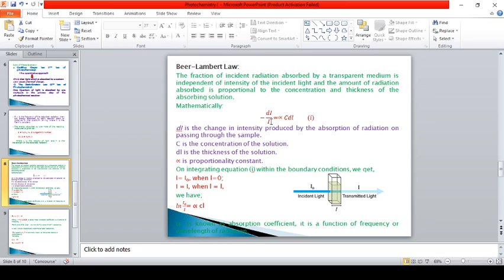Mathematically, it is expressed as minus dI by I equals alpha times C dL. dI is the change in intensity produced by the absorption of radiation on passing through the sample. The minus sign signifies that the intensity decreases while passing through the sample.